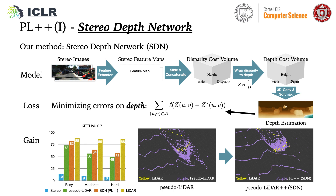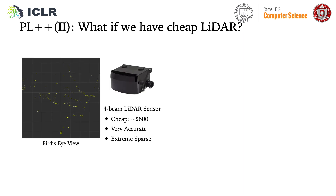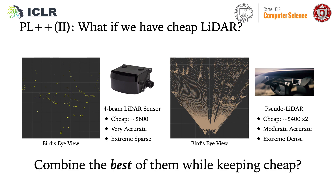We found that this can greatly improve the Sudolidar quality on faraway objects, and lead to better 3D detection accuracy. Secondly, the LIDAR sensor can actually be very cheap if the bin number is limited, such as sparse LIDAR can provide limited samples of accurate depth information. In contrast, Sudolidar can infer the general shape and rough depth of an object. If we can combine the best of these two, we can have both accurate depth and shape, while still keeping the cost low.